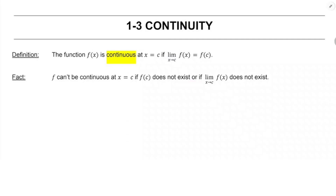Welcome back. In this video, we're going to be talking about continuity and continuous functions. We're going to start with the definition of continuous that we're going to take for AP Calculus. The function f is continuous at x equals c if the limit of the function is equal to the value of the function at x equals c.